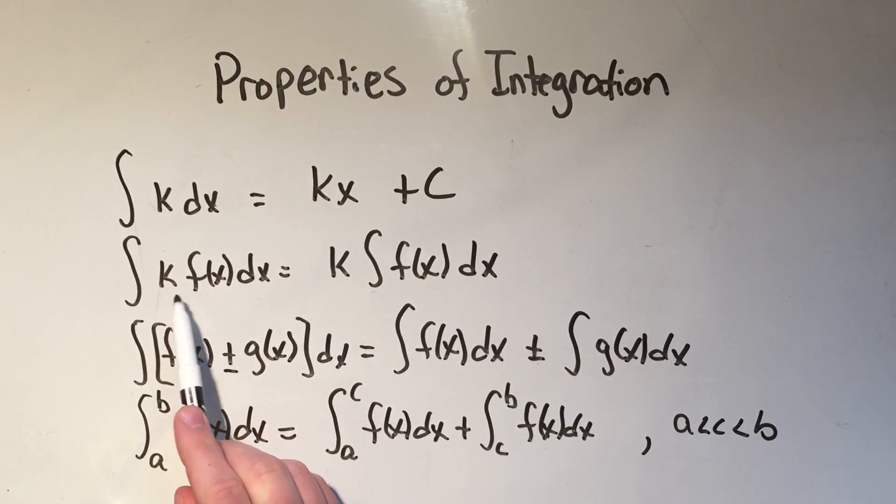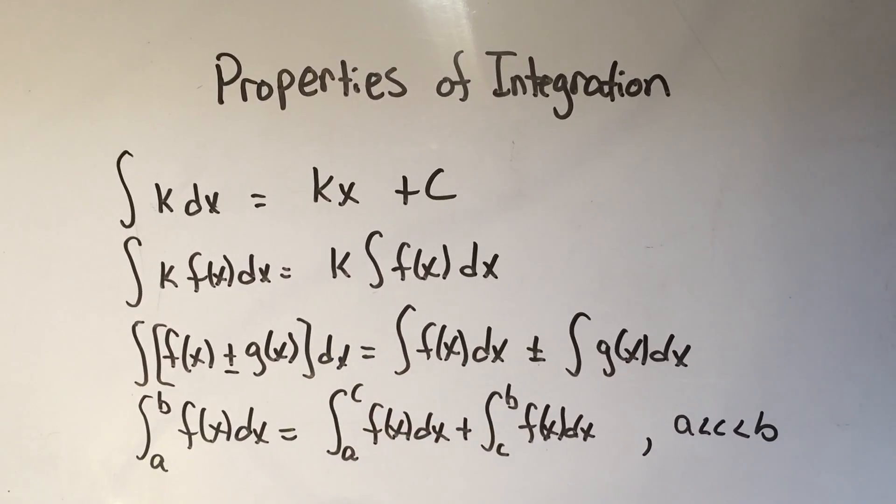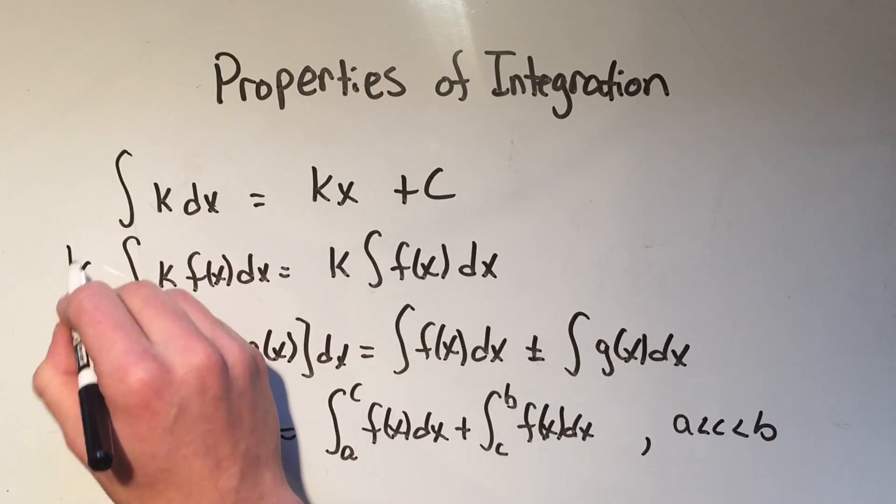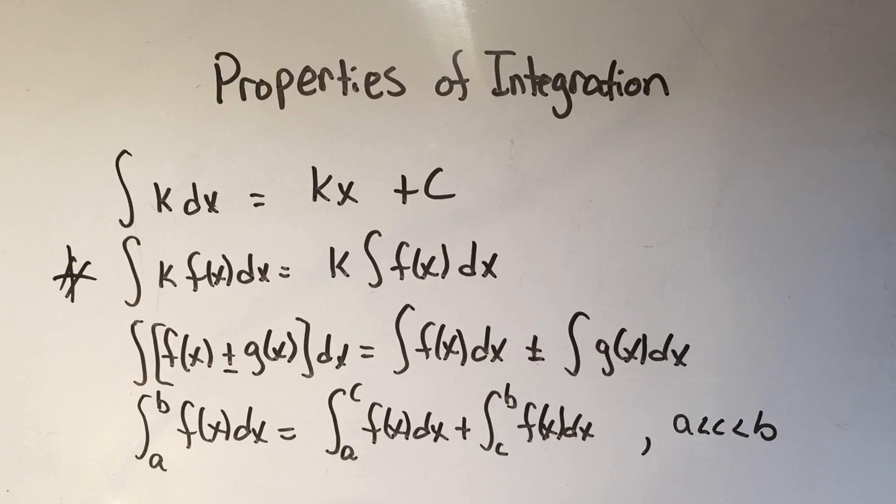If you have a constant times a function, you're allowed to just pull that constant out front of the integral sign. And I use that one a lot. That one happens very often. That's like a super useful one. I'm just going to star that one. Actually, all of these could probably get stars. So if you have a constant, you can just pull the constant out front.